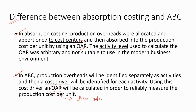The main difference between absorption costing and ABC is that under absorption costing, we recognize costs under cost centers, whereas in activity-based costing, we recognize overheads as activities. Instead of using an arbitrary activity level, we use a cost driver under activity-based costing. Using this cost driver, we calculate the driver rate, which is more accurate than the overhead absorption rate.